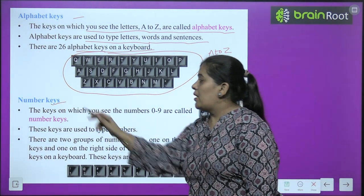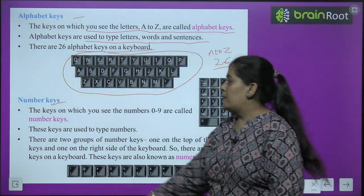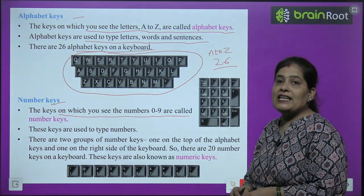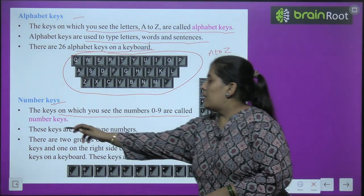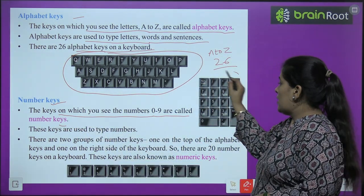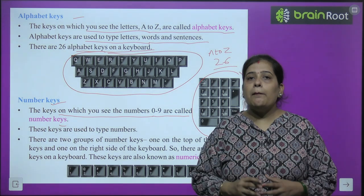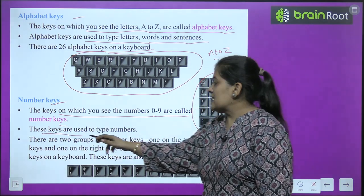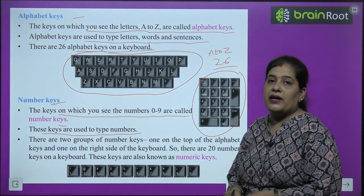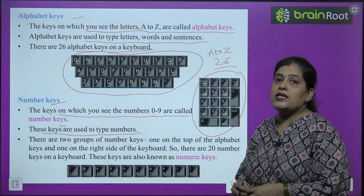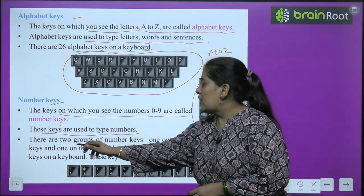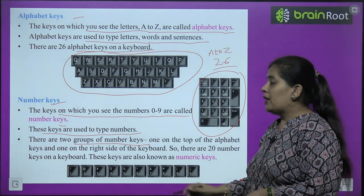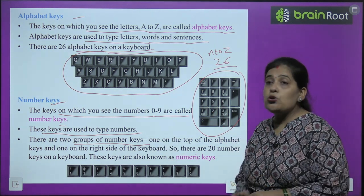Next, number keys. The keys on which you see the numbers 0 to 9 are called number keys. The keys on which you see 0 to 9 are our number keys. These keys are used to type numbers. There are two groups of number keys on the keyboard.